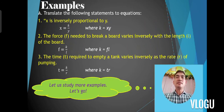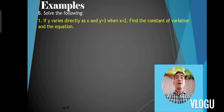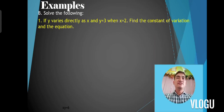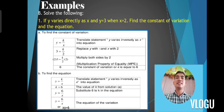Let us study more examples. Solve the following: if y varies inversely as x and y is equal to 3 when x is 2, find the constant of variation and the equation. To find the constant of variation, first translate the statement 'y varies inversely as x' into the equation y is equal to k over x.